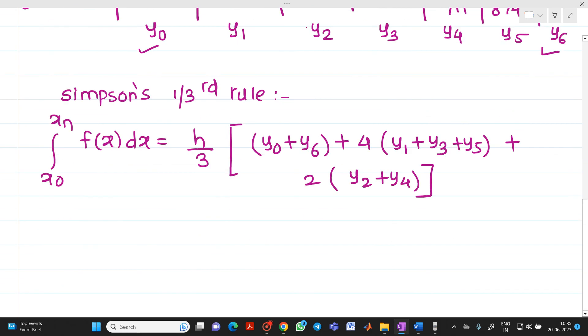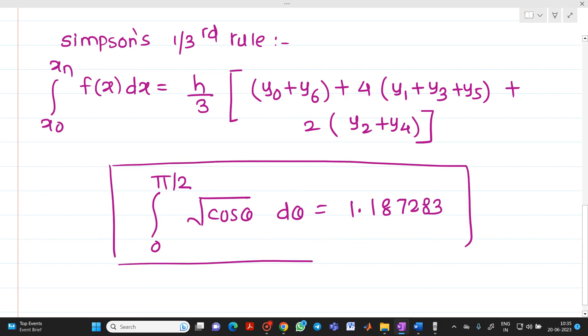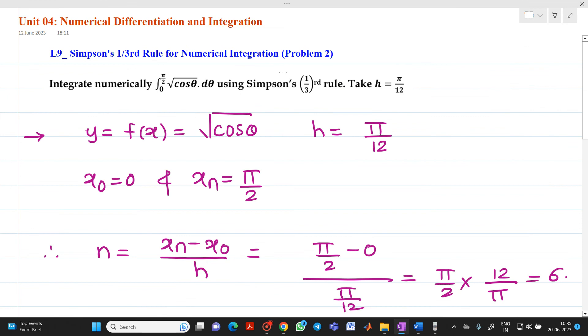If you substitute and if you solve it carefully, then we will get the answer of integration 0 to π/2 √(cos θ) dθ equal to 1.187283. So this will be your final answer for this given function. This is the second problem that we discussed about Simpson's one-third rule. Thank you for watching this video.